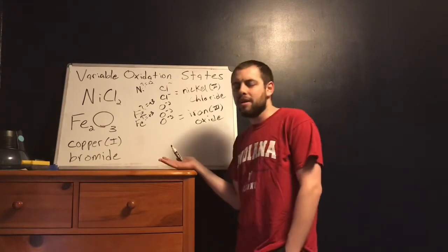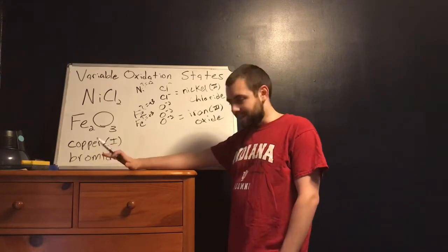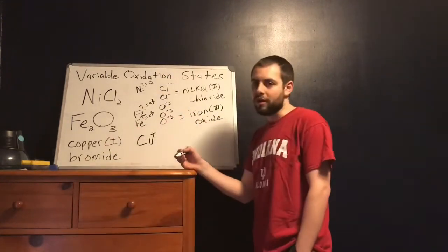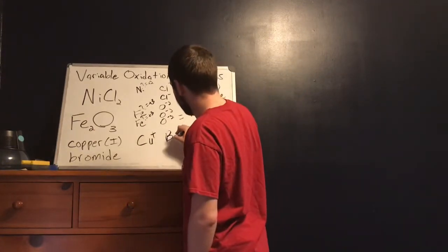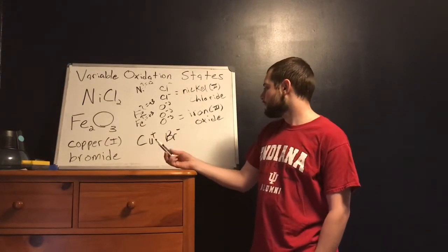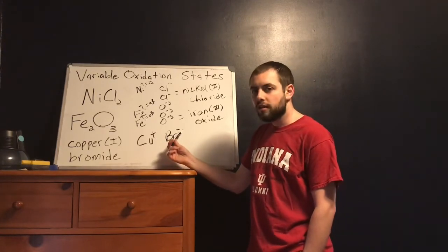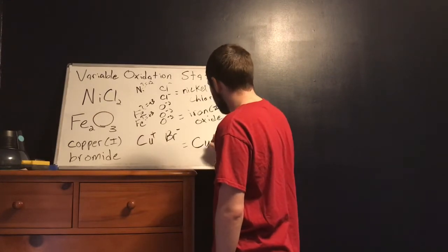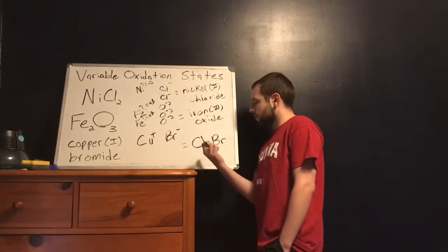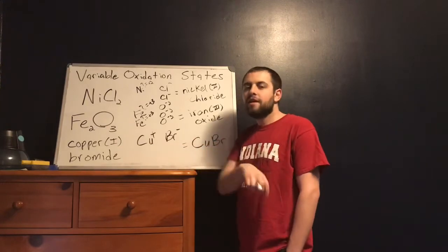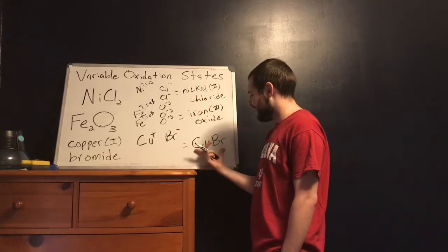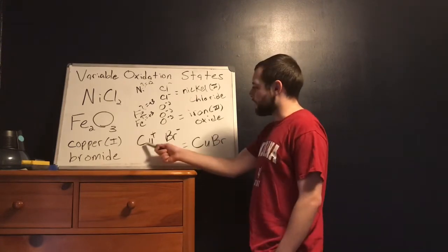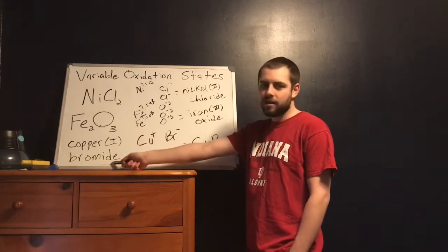Going from a name to a formula: copper one bromide. Break it into the ions — copper with a plus one charge, and bromide, which is bromine with a common oxidation state of minus one. Positive one and negative one — these charges already cancel out. So to make this formula I just bond them together: CuBr. This is copper one bromide. And you've got to be careful going back the other way — if I gave you CuBr, you can't just tell me it's copper bromide. That's not specific enough. You've got to tell me that this is copper one bromide.